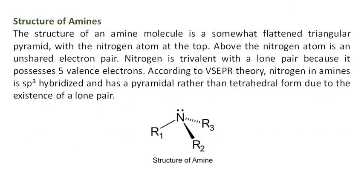Structure of amines: The form of an amine molecule is a somewhat flattened triangular pyramid, with the nitrogen atom at the top. Above the nitrogen atom is an unshared electron pair. Nitrogen is trivalent with a lone pair because it possesses five valence electrons. According to VSEPR theory, nitrogen in amines is sp3 hybridized and has a pyramidal rather than tetrahedral form due to the existence of a lone pair.